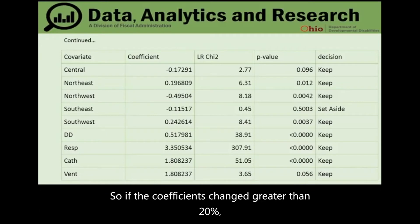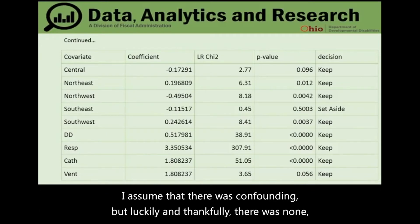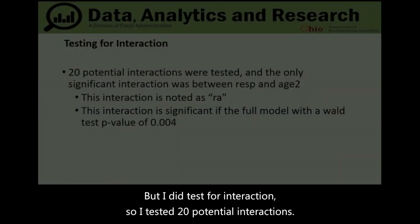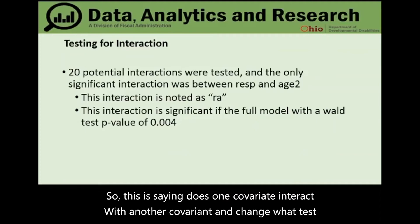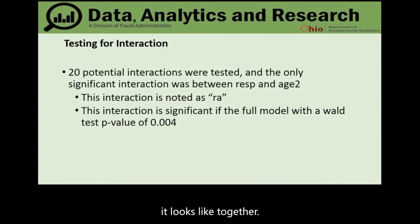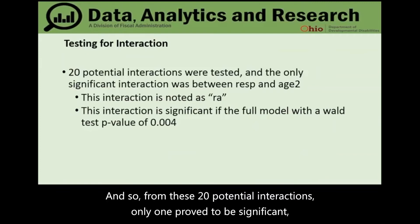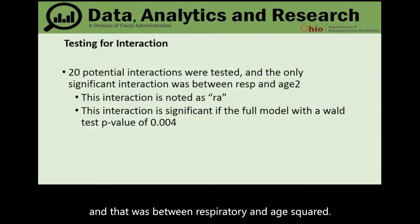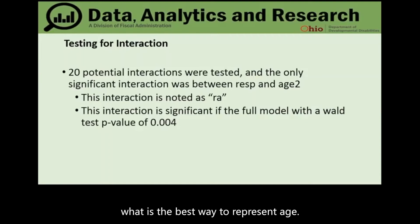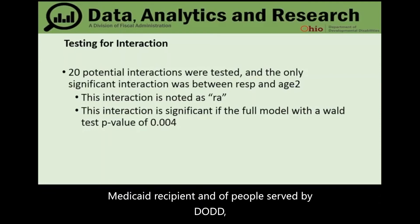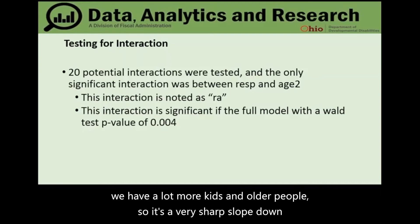During the analysis, confounding was assessed — if coefficients changed greater than 20%, confounding was assumed. Fortunately, there was none. Twenty potential interactions were tested to see if one covariate interacts with another to change what sepsis looks like together. Of those 20 potential interactions, only one proved significant: the interaction between respiratory disease and age squared.